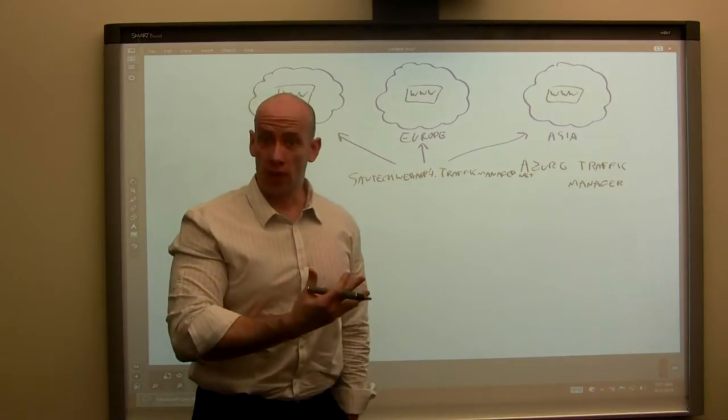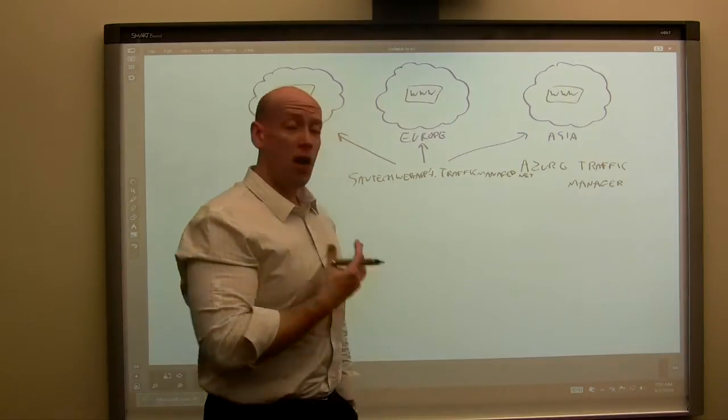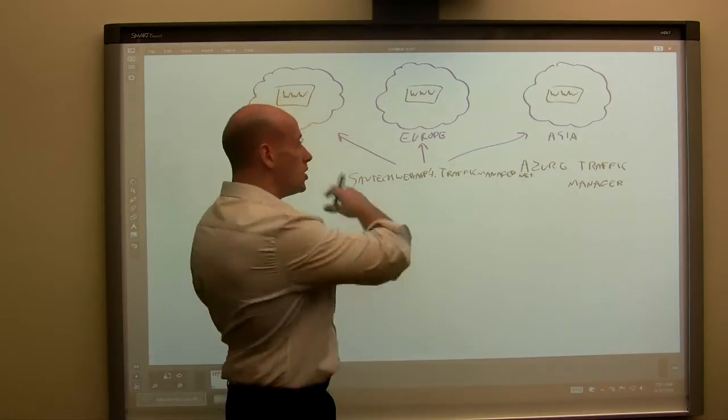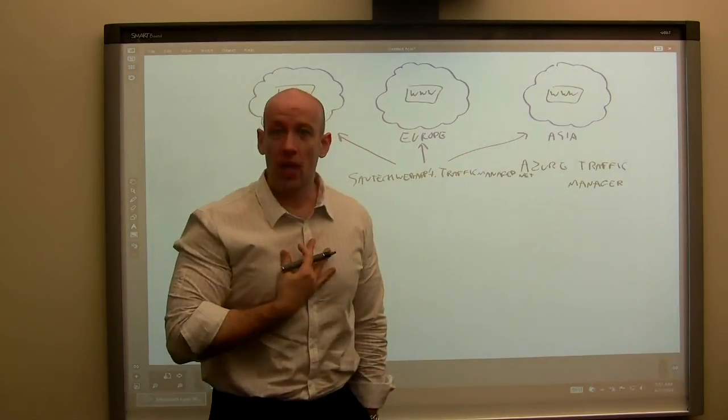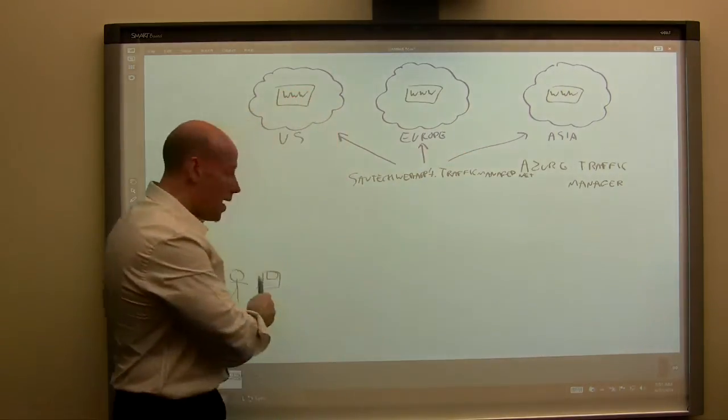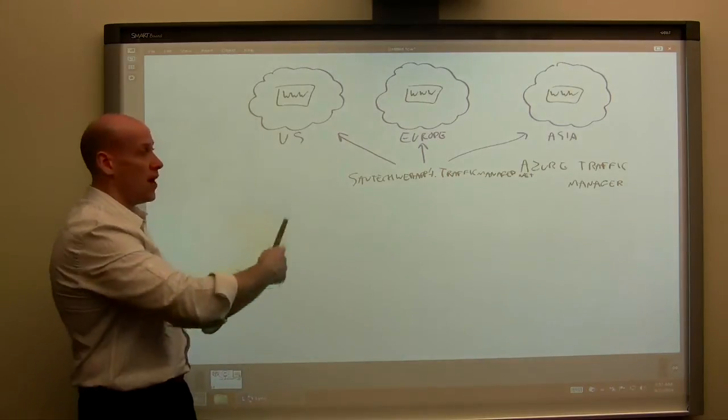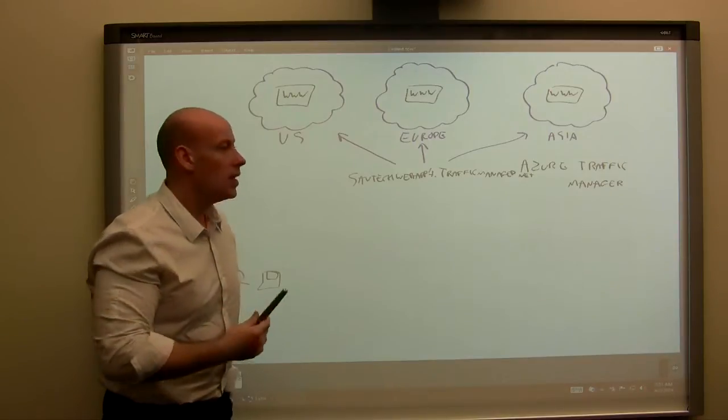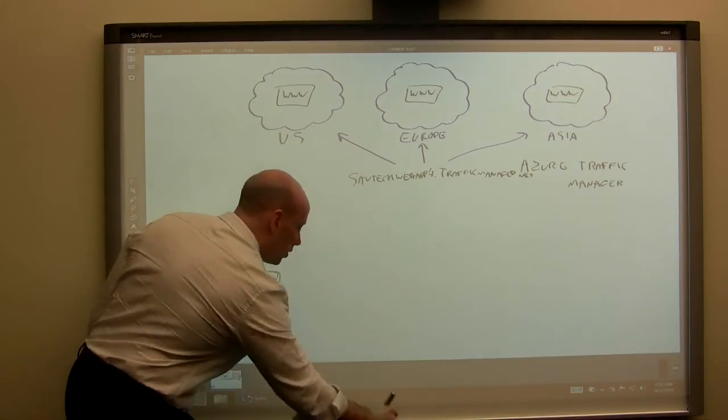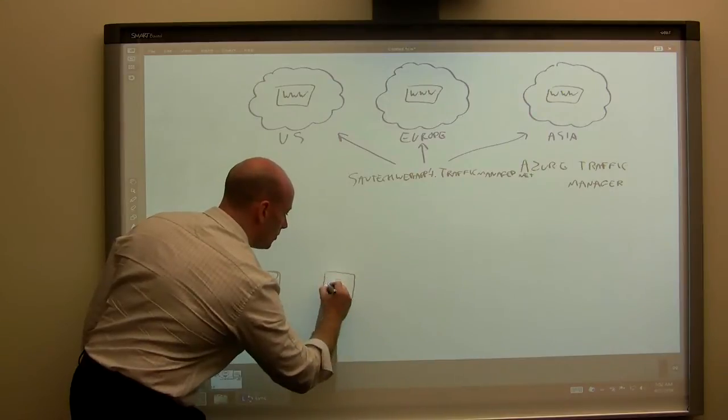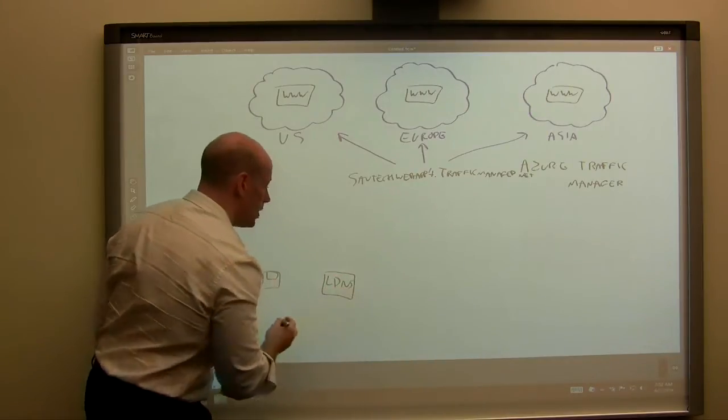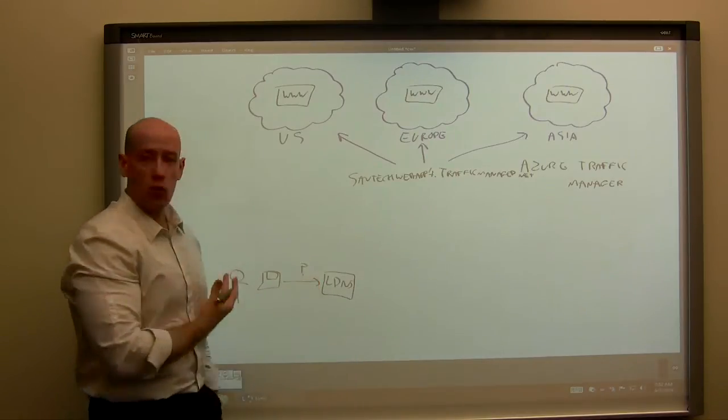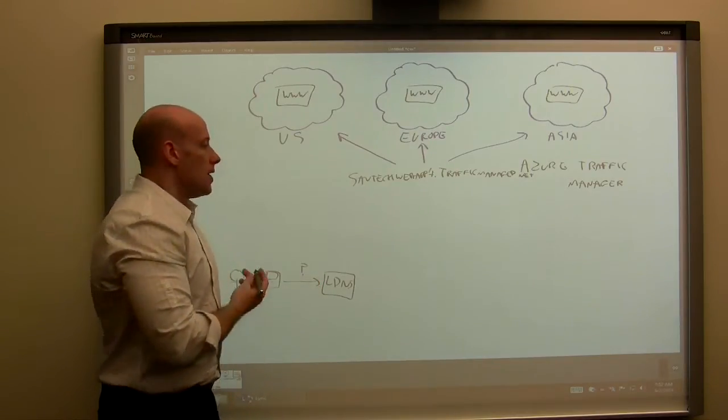And I have different load balancing options available on how this exactly works, and I'll cover those in a minute. But let's take the default performance one. That's what 70% of people use. And the idea of the performance one is it wants to redirect me to the closest service available. And the way it does this is when I, on my client, want to find www.savtech.com, whatever, my request goes to my local DNS server.